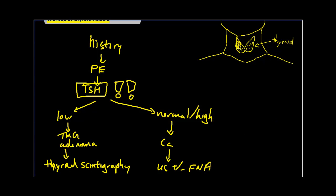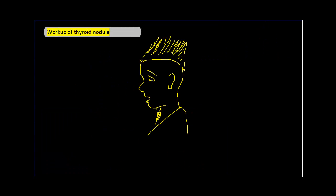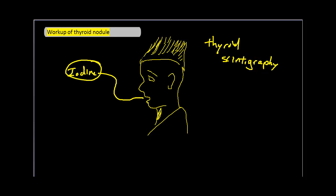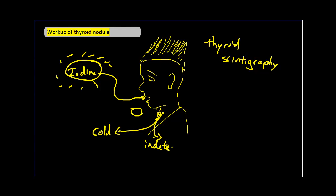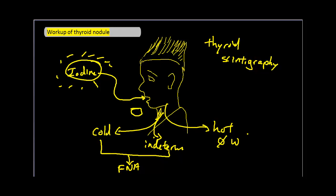Let's say in this case our patient had a low TSH, so our next step is thyroid scintigraphy. This allows us to determine the functional status of the nodule — the patient swallows 100 to 200 microcuries of radioactive iodine, and a counter determines the uptake of different thyroid tissues. From this scan, there are three main outcomes: cold, indeterminate, or hot nodule. Nonfunctioning and cold nodules require further workup with fine needle aspiration, as they're more likely to be cancerous. Hot nodules are less likely to be cancerous and do not require fine needle aspiration.